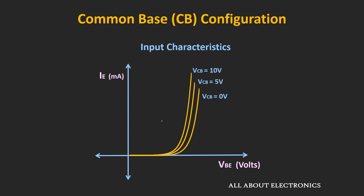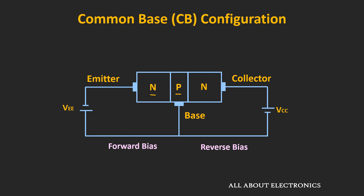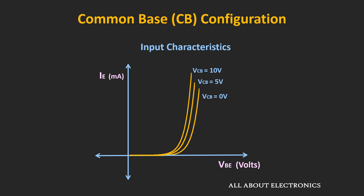As the value of VCB increases, the curve slightly shifts towards the left-hand side, and the emitter current also increases. The reason is that as the collector-base junction gets more and more reverse biased, the width of the depletion region increases, causing the base region to become narrower. Therefore, less voltage is required to forward bias the emitter-base junction, and the curve shifts to the left.